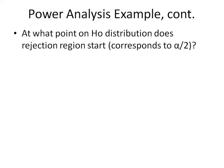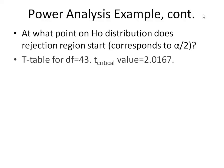The first question to ask is: at what point on the null hypothesis distribution does the rejection region start? For a two-tailed test, that'll correspond to alpha over 2. So we're going to use a t-test, because we don't know the variance of our population. Degrees of freedom for a mean with a t-distribution is n minus 1, and with 44 samples, degrees of freedom is 43. Our t-critical value is 2.0167.